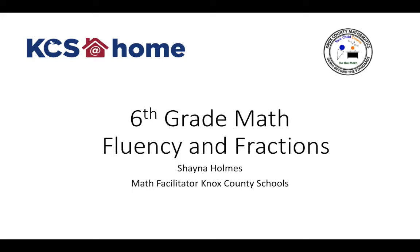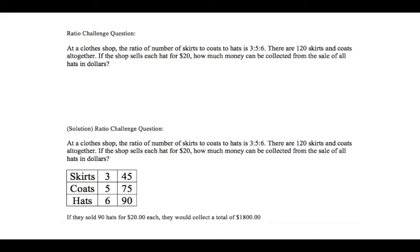Before we get started, this is the answer to last week's challenge problem. It said at a clothes shop the ratio of number of skirts to coats to hats is 3 to 5 to 6, and there are 120 skirts and coats all together. If the shop sells each hat for $20, how much money can be collected from the sale of all the hats? Using a ratio table — skirts to coats to hats is 3 to 5 to 6 — that scales up to 45 to 75 to 90. So if they sold 90 hats for $20 each, they would collect a total of $1,800.